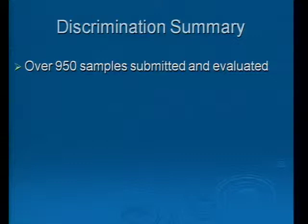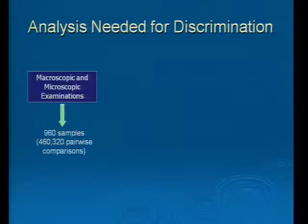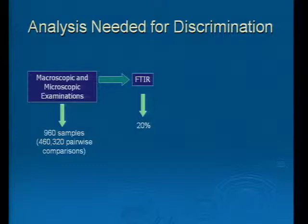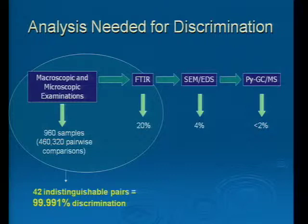So where does that leave us? Over 950 samples were submitted and evaluated. One 10-layer-plus pair was indistinguishable through SEM. Ten pairs were indistinguishable through pyrolysis. Going back to Tippett's work: if we lump together our macroscopic and microscopic exams with FTIR, we found 42 pairs indistinguishable after that suite of exams — already providing 99.991% discrimination. Adding further instrumental techniques, where 4% of the original 960 samples went forward to SEM and less than 2% went forward to pyrolysis, you have an overall discrimination where only 11 pairs remained indistinguishable — a 99.998% overall discrimination.